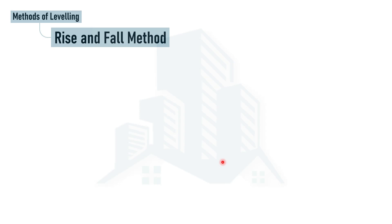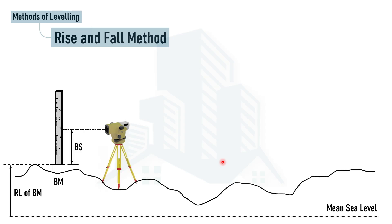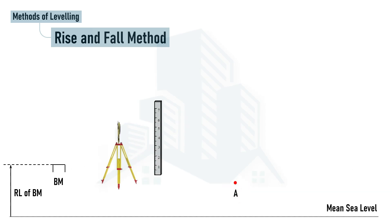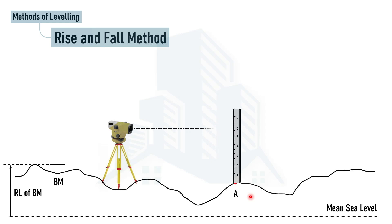Now let's shift to the second method: the rise and fall method. Similar to before, we take the staff reading at the benchmark first, which is the back sight reading. We know the reduced level at the benchmark. To determine the reduced level at point A, we again take the staff reading at point A.